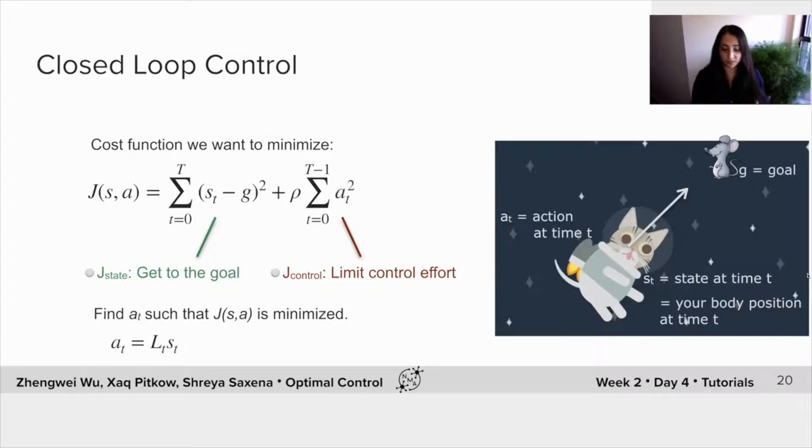But if we minimize a(t), in fact, we'll get to the goal a little bit slower, as you can imagine. And here we actually consider again, that our a(t) is a linear function of our state at time t.